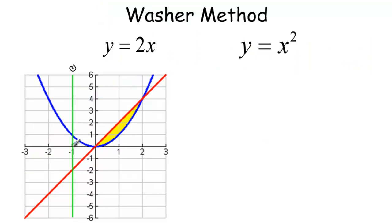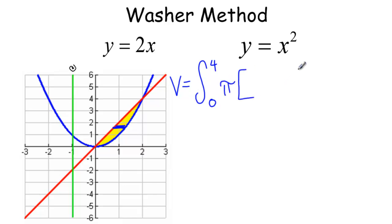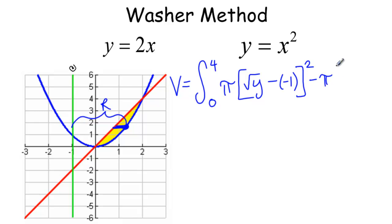Now let's use the washer method around the line x equals negative one. Perpendicular to a vertical axis means horizontal slices, so we integrate in terms of y. The integral goes from 0 to 4. For the washer method: pi times outer radius squared. The outer radius is the distance from the farther function to the axis — the farther function is square root of y, and the axis is negative one, so square root of y minus negative one, right minus left. Minus pi times inner radius squared: the closer function is the red function, so one-half y minus negative one, dy.